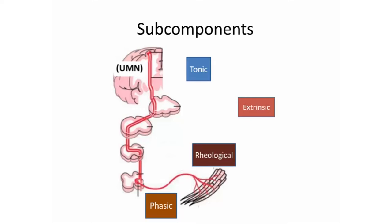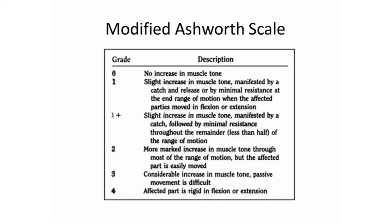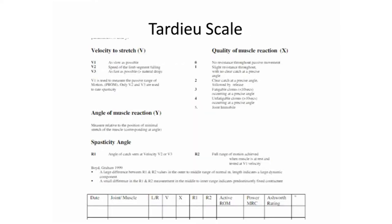To understand spasticity, you should know the four subcomponents. The tonic component is related to the upper motor neuron no longer acting properly — dysregulation of the anterior horn cell. Next is the phasic aspect, related to polysynaptic reflexes. Next is the rheological, which is the muscle changes that happen due to spasticity, where the muscle can actually drive the spasticity further. And finally, the extrinsic stimuli that can also make spasticity happen. The modified Ashworth scale measures tonic changes in spasticity, while the TARDIEU scale is a fine-tuned scale that measures not only the tonic and phasic aspects but also the rheological.